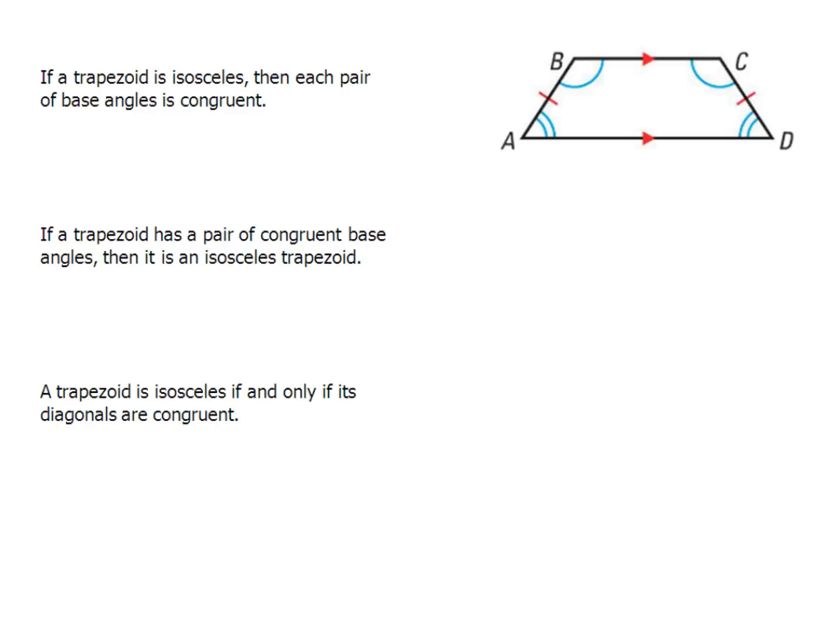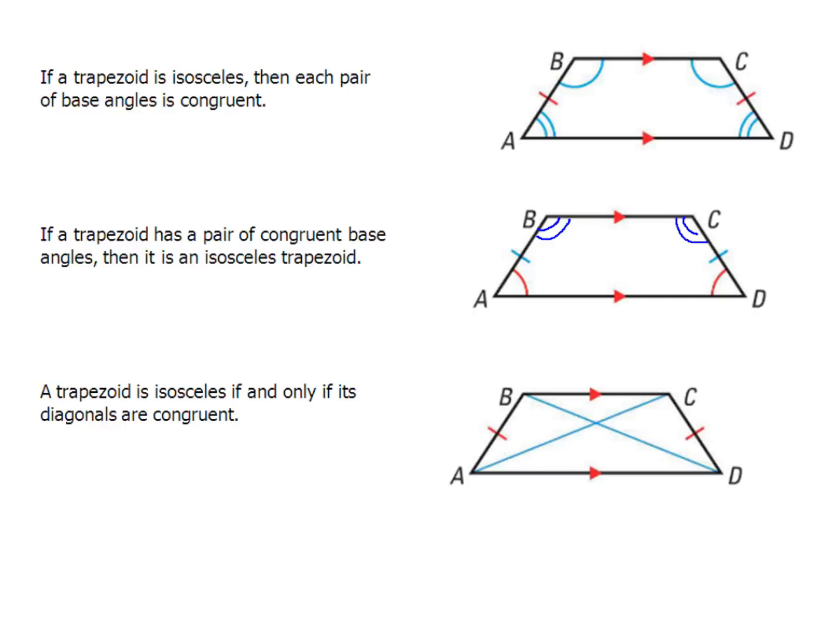Now, another statement says if a trapezoid has a pair of congruent base angles, then it is an isosceles trapezoid. If you see a picture that looks like this, then that means a trapezoid is going to be an isosceles trapezoid. Not only could angles A and D be marked, but instead you might have angle B and angle C marked because those are your other base angles. You only need to have a pair of congruent base angles. So either A and D could be congruent or B and C could be congruent. And then lastly, a trapezoid is isosceles if and only if its diagonals are congruent. So that means when you connect A to C, that distance is going to be the same distance as from B to D.